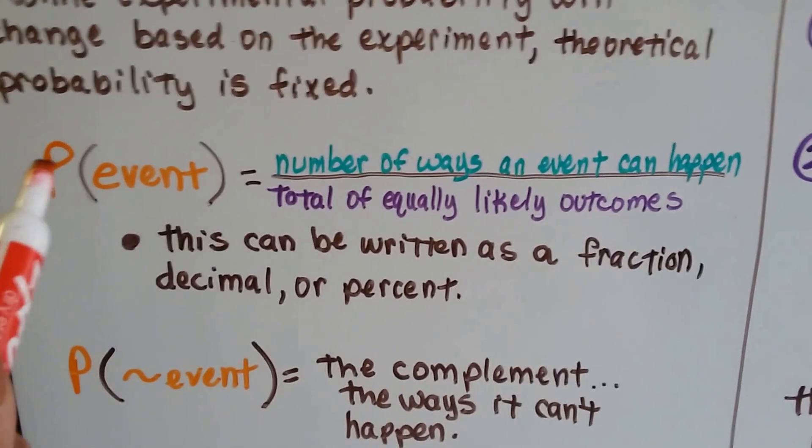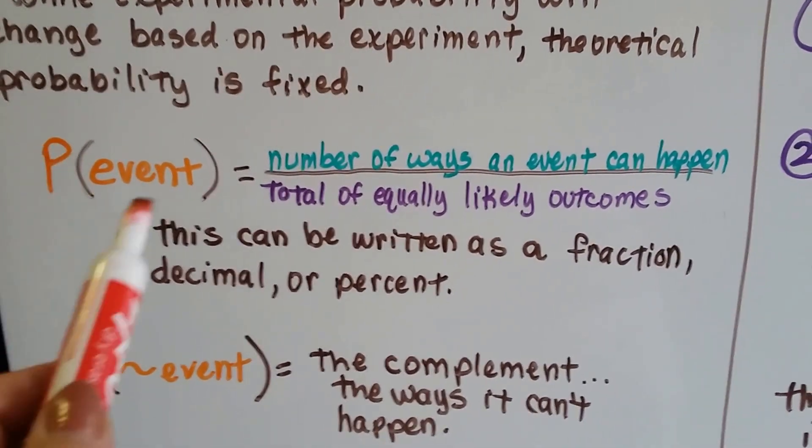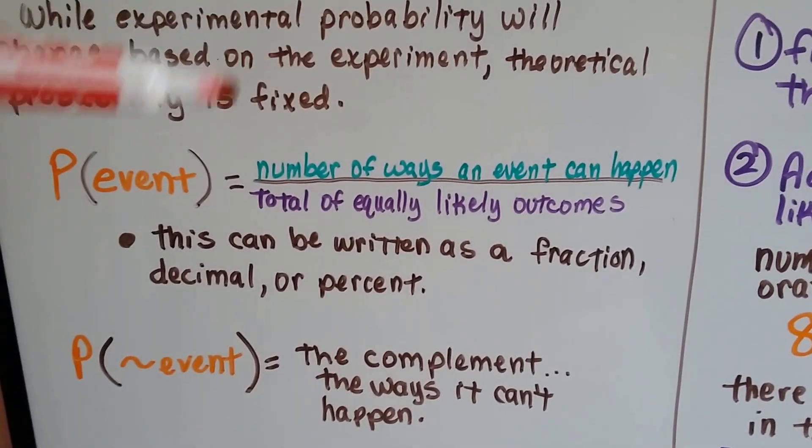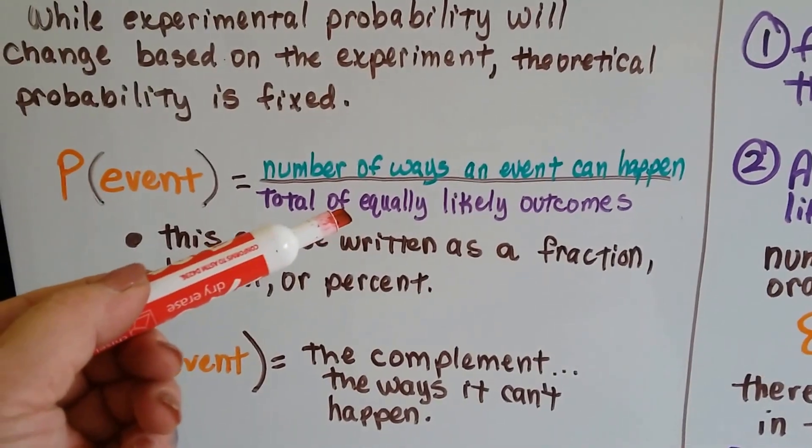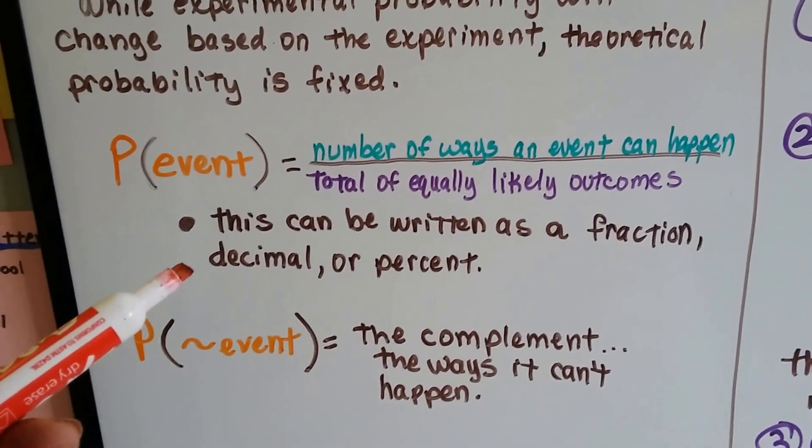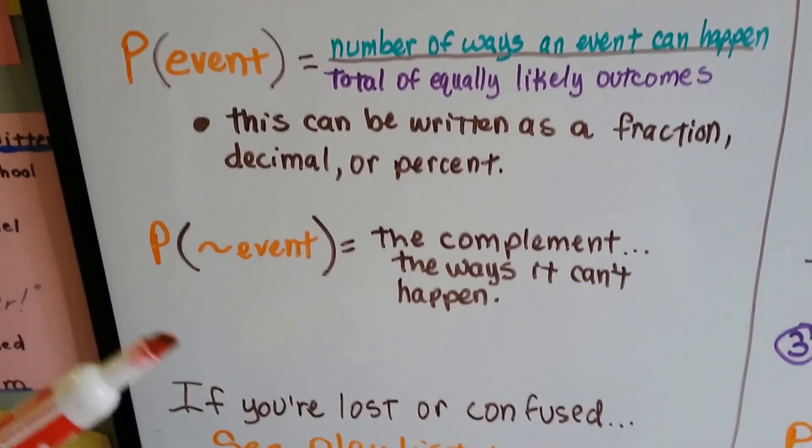The fraction would be P event, that's the probability of the event happening, is the number of ways an event can happen over the total of equally likely outcomes. That's theoretical. This can be written as a fraction, decimal, or percent like we did in the experimental probability.